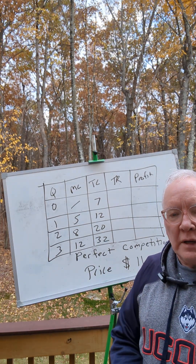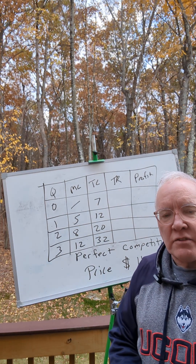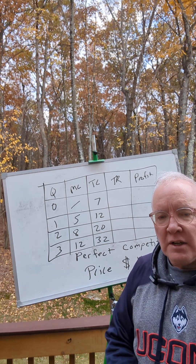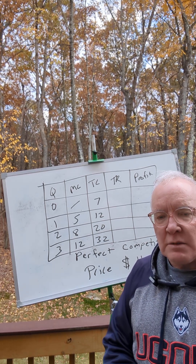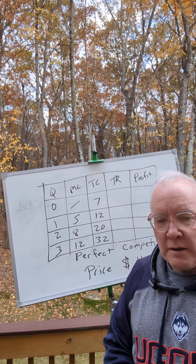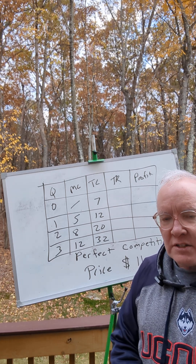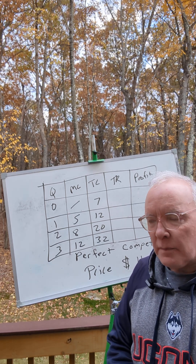The rule that we learned in class is that the firm in perfect competition should produce the maximum quantity where the marginal cost is less than or equal to the price.